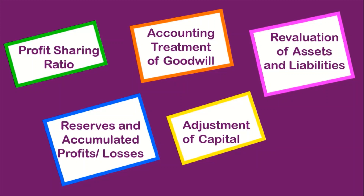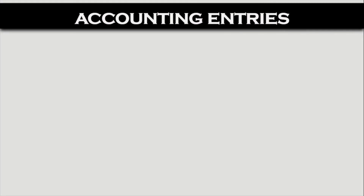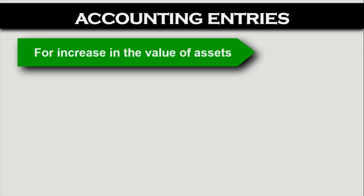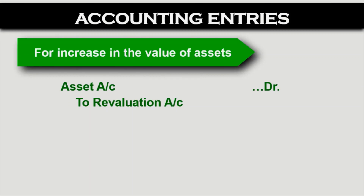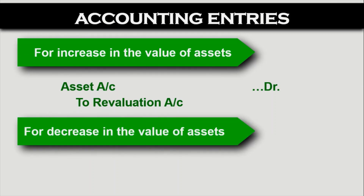Let's see how entries are posted and how effect to this revaluation is given. Accounting entries of revaluation: suppose there is machinery of Rs 5 lakh but at present its value is Rs 6 lakh — so there is an increase in the value of the asset. Now asset has debit balance; to increase debit, we debit it. So we will debit the asset account and credit the revaluation account. For decrease in the value of an asset, as in the case of our building — value of building decreases by Rs 2 lakh — we will debit the revaluation account.